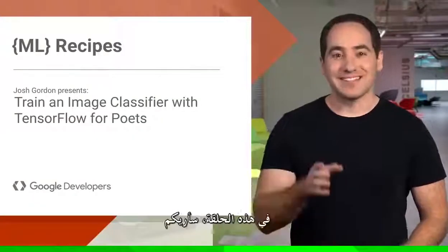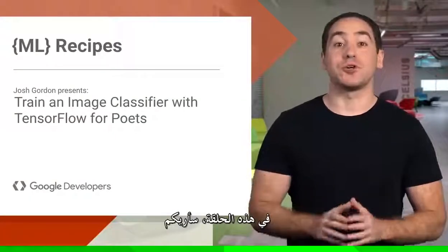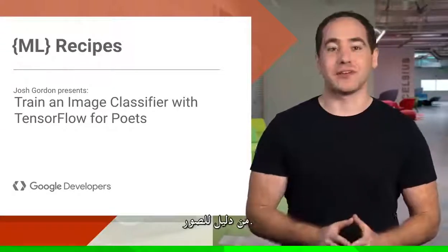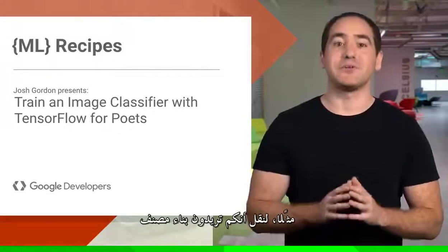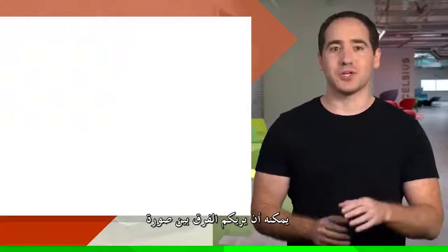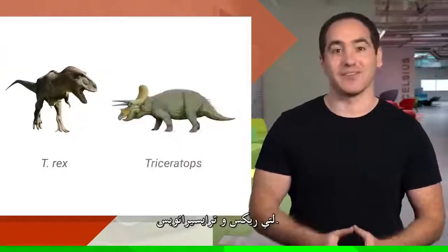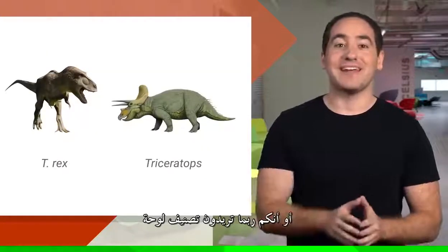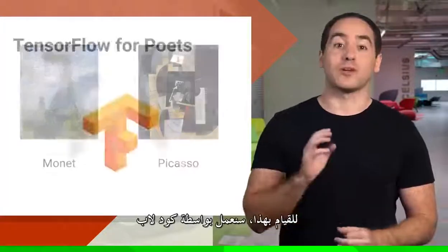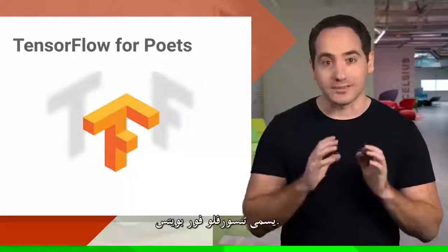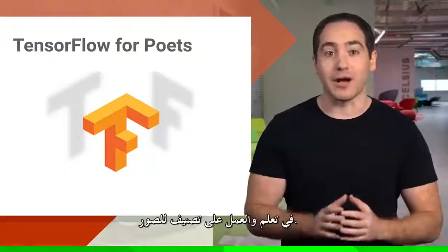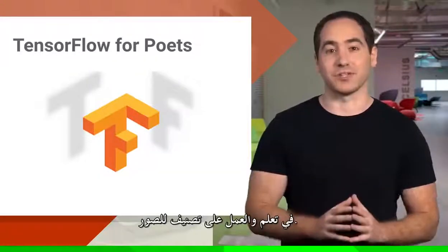Hey everyone, welcome back. In this episode, I'll show you how to train your own image classifier, starting from just a directory of images. For example, say you want to build a classifier that can tell the difference between a picture of a T-Rex and a Triceratops, or maybe you want to classify a painting as being a Monet or Picasso. To do that, we'll work with a code lab called TensorFlow for Poets, which is a great way to get started learning about and working with image classification.